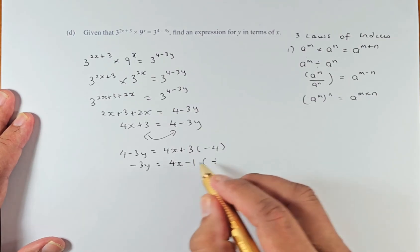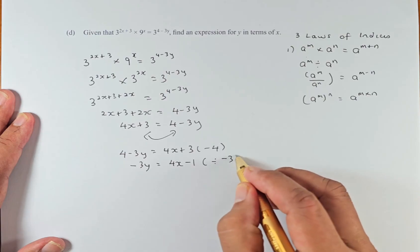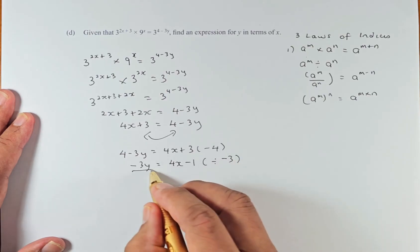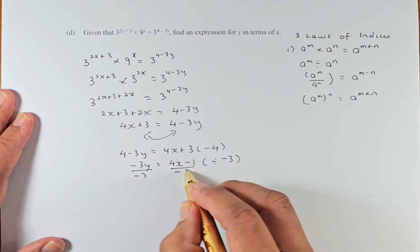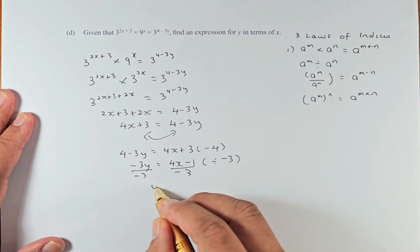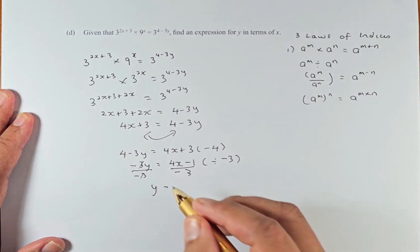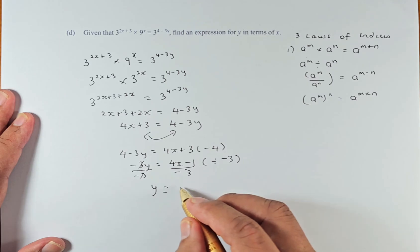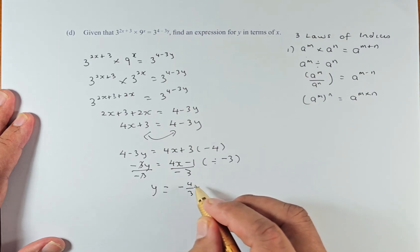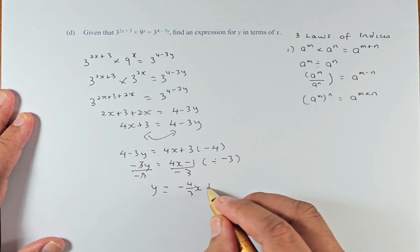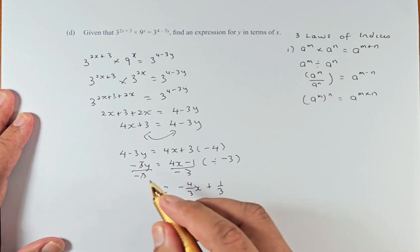Now what we're going to do, we're going to divide every expression by -3 because we want y. So y, because -3 cancels out, becomes y equals -4/3 x plus 1/3. So that is the answer: y equals -4/3 x plus 1/3.